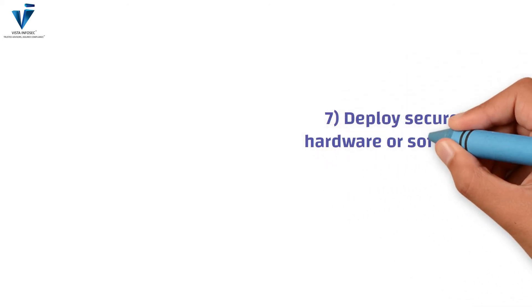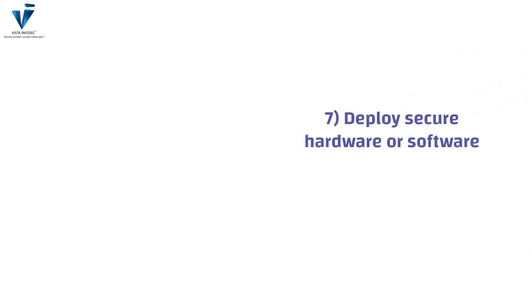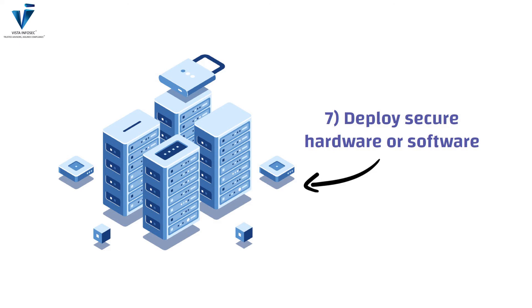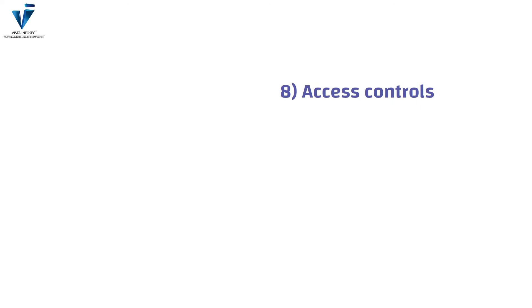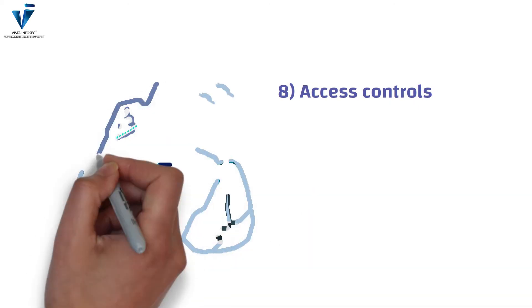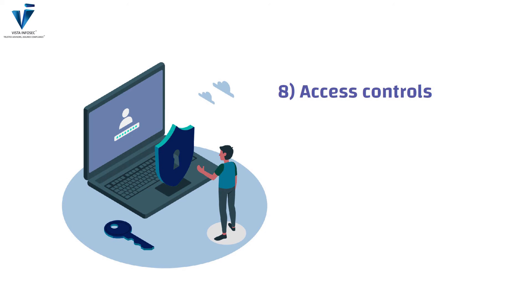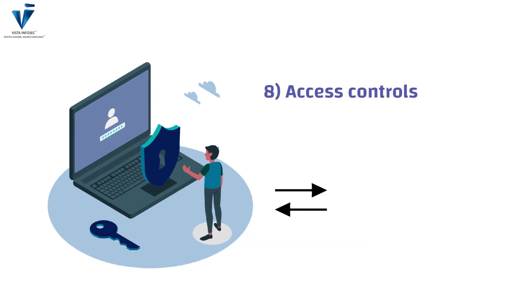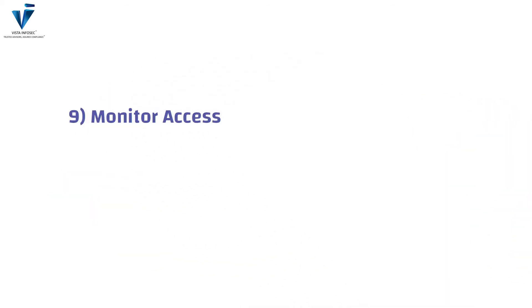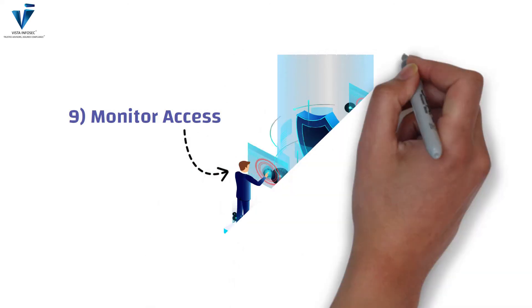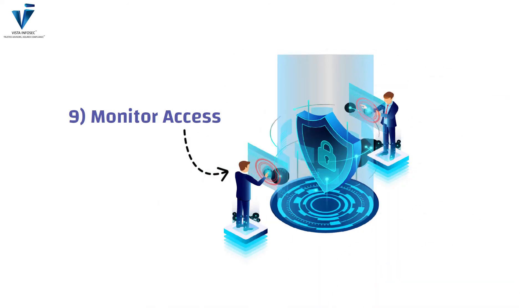The seventh item is to deploy secure hardware or software. This involves installing vendor-specific updates and security patches in a timely manner. The eighth item is access controls, which involves implementing security access controls such as key cards, passcodes, and biometrics to strengthen physical access controls. The ninth item is monitoring access — this includes installing physical security equipment and monitoring access through equipment like CCTV cameras and other surveillance technology.